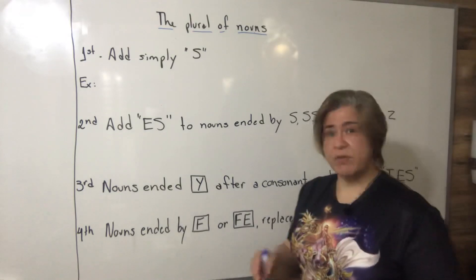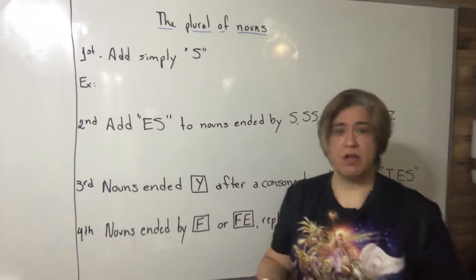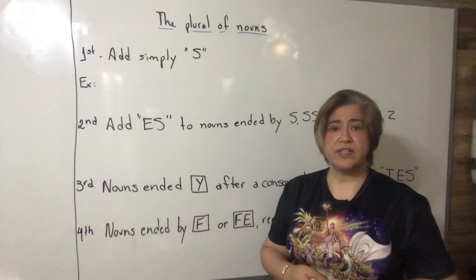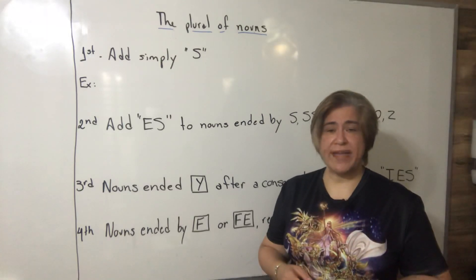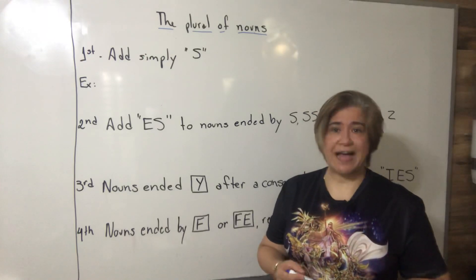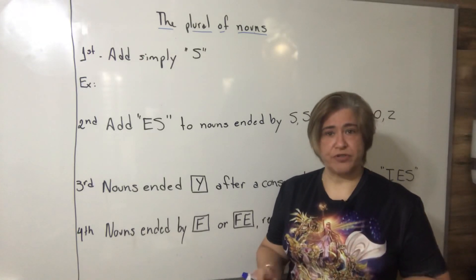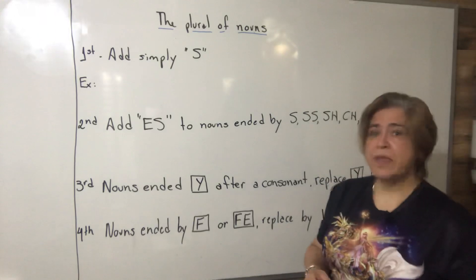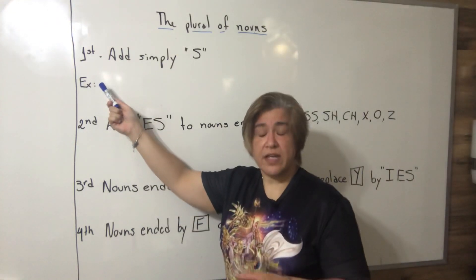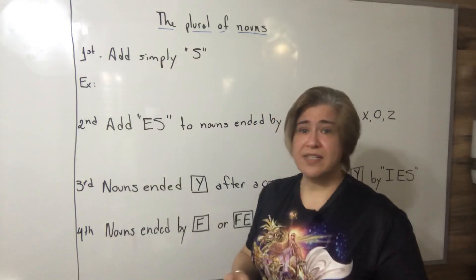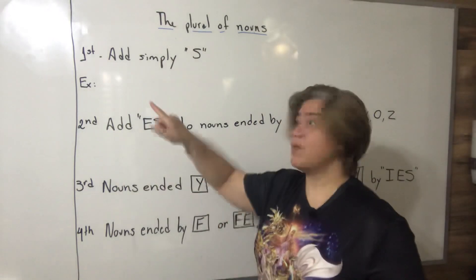In Portuguese, the plural of nouns is simple - we just add S to the nouns and we have the plural. For example, carro becomes carros in Portuguese. In English it's not exactly the same, but the number one rule is similar.